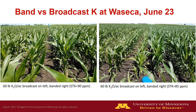Let's look at some pictures of the visual differences we saw between band and broadcast K at Waseca. This picture was taken on June 23rd. In the left photo, the person standing in the back is splitting the plot. The left side was broadcast with 60 pounds of K2O per acre, and the right side was the banded treatment. You can see the banded treatment has better color, more leaf area index, and much taller corn. The soil test in these two plots was 90 parts per million.